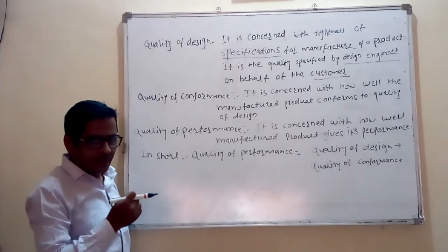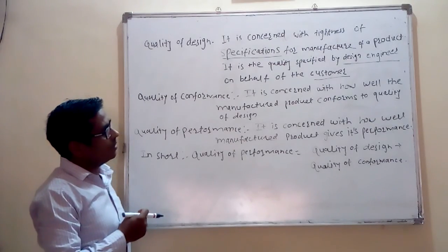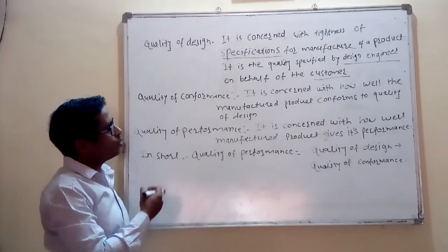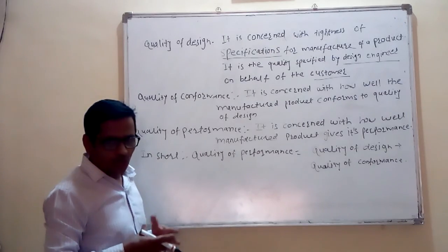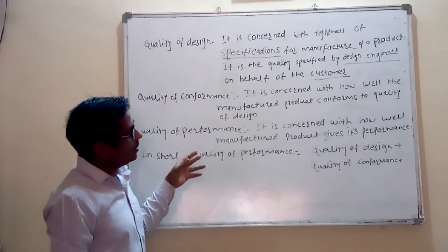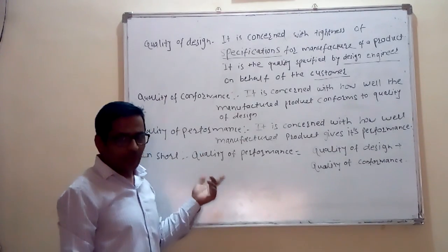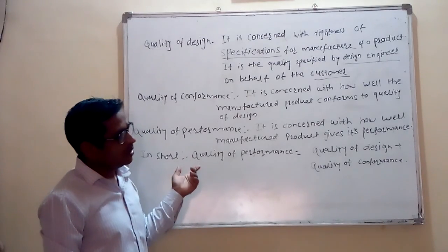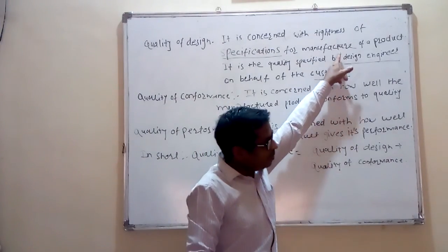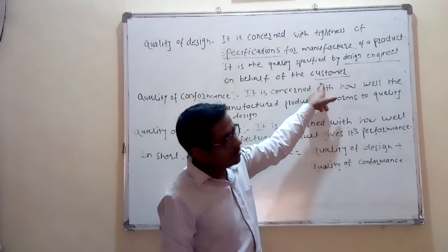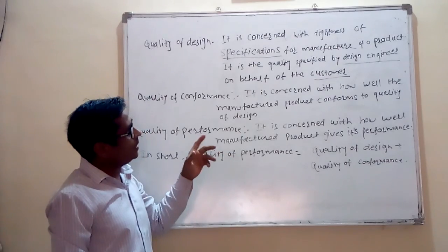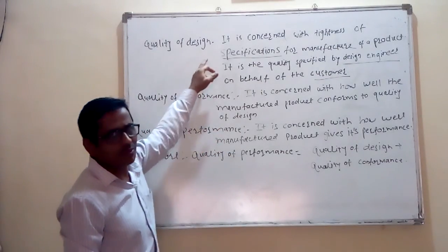The customer does not approach the design engineer directly. He generally approaches a survey engineer, or in short, a survey person appears to the customer. Suppose a company is starting a new tractor or any farm equipment. Then they want to know the requirements of the customer. Now, the farmer is their customer, so naturally they will approach the farmer to find out his requirements. The farmer doesn't know technical things, and the technical person doesn't know anything about farming. So the customer tells his requirements in his own words, and then the design engineer translates these requirements into product specifications.